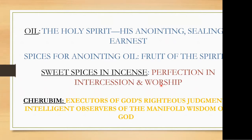Though not an offering of the children of Israel, cherubim were inscribed on the veil and on the inner curtain of the tabernacle itself. The cherubim are the executors of God's righteous judgment, making sure everything is done perfectly according to God's will, and also the intelligent observers of the manifold wisdom of God — not in themselves but as displayed in mankind — as we read in Ephesians chapter 3.